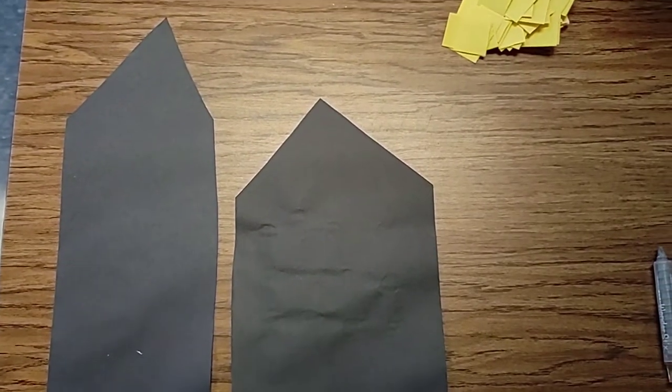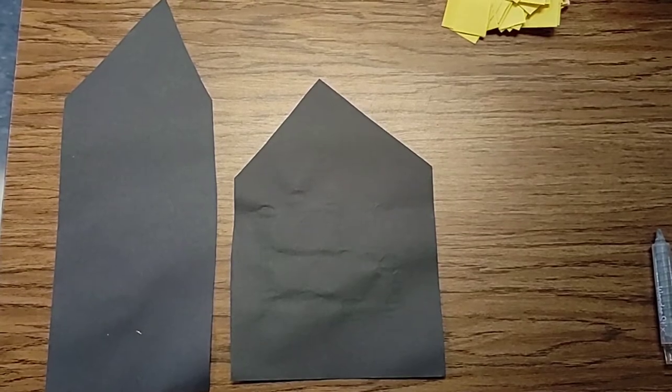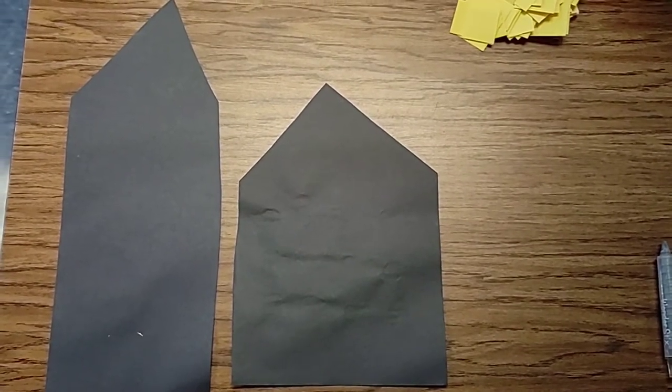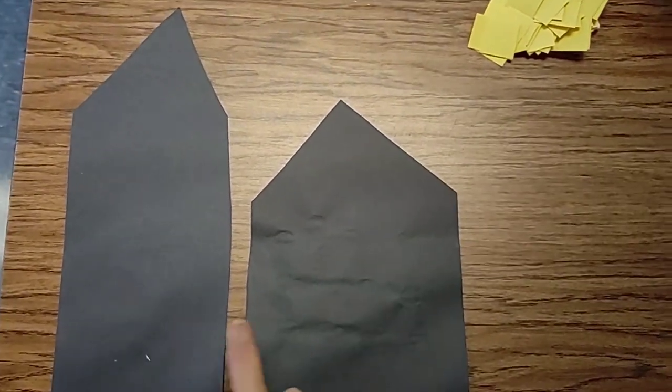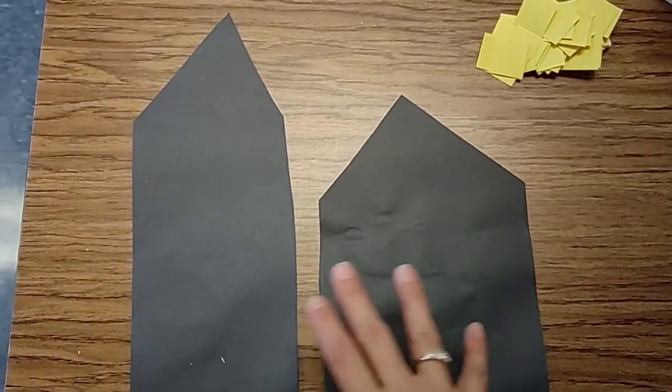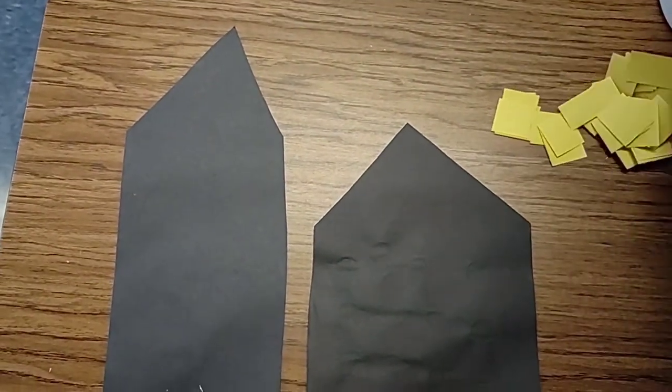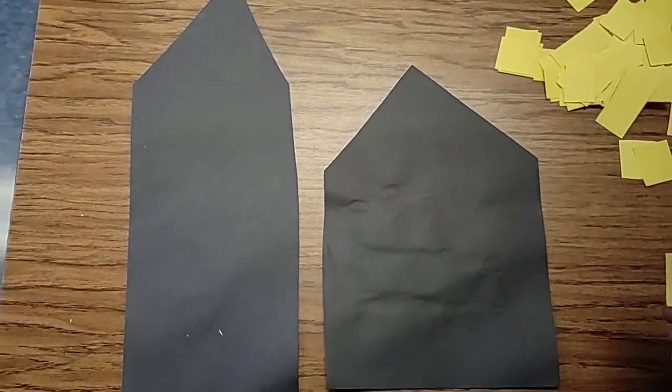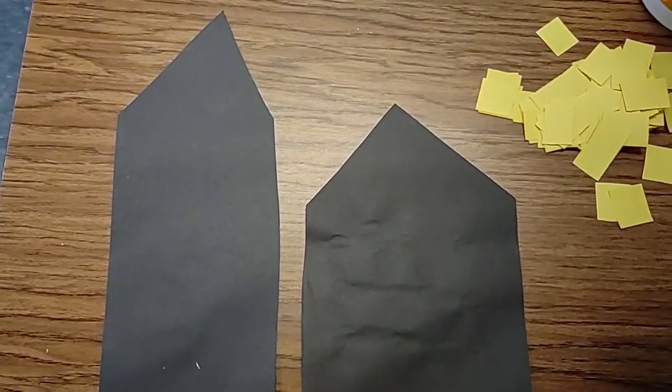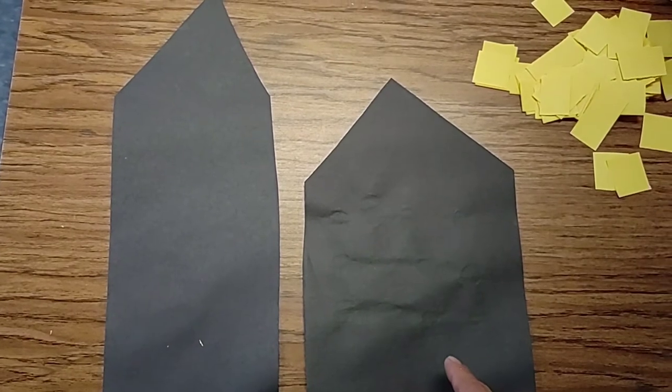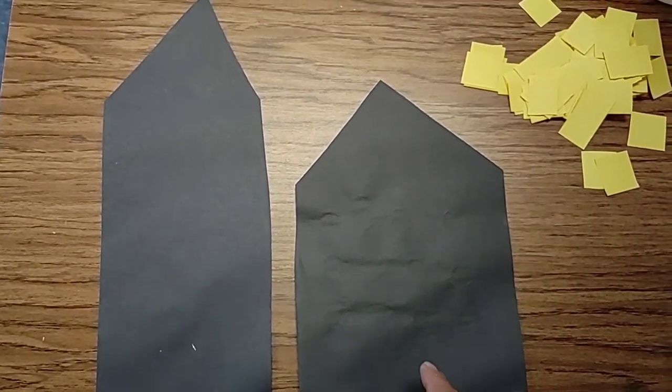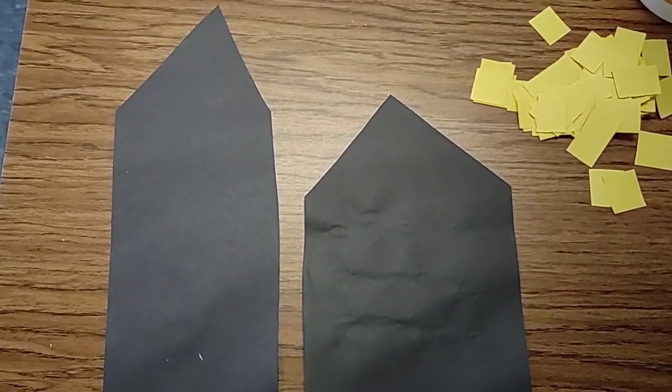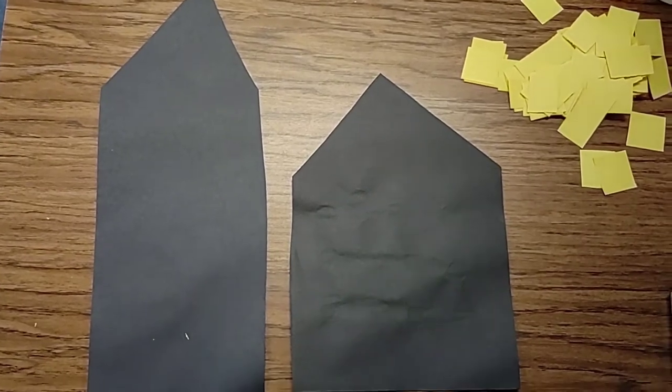If we were in class, we would be doing a project called Array City. That's where we have these little cutouts of houses. And we have little yellow tiles for windows. And we're going to build an array and represent our multiplication fact on our houses. Then we would put all